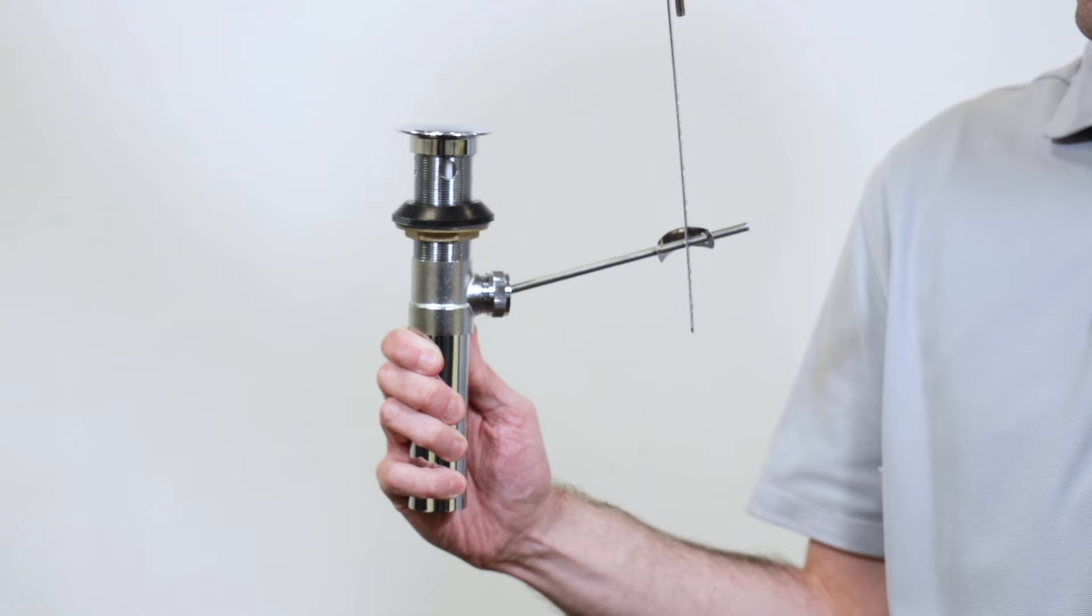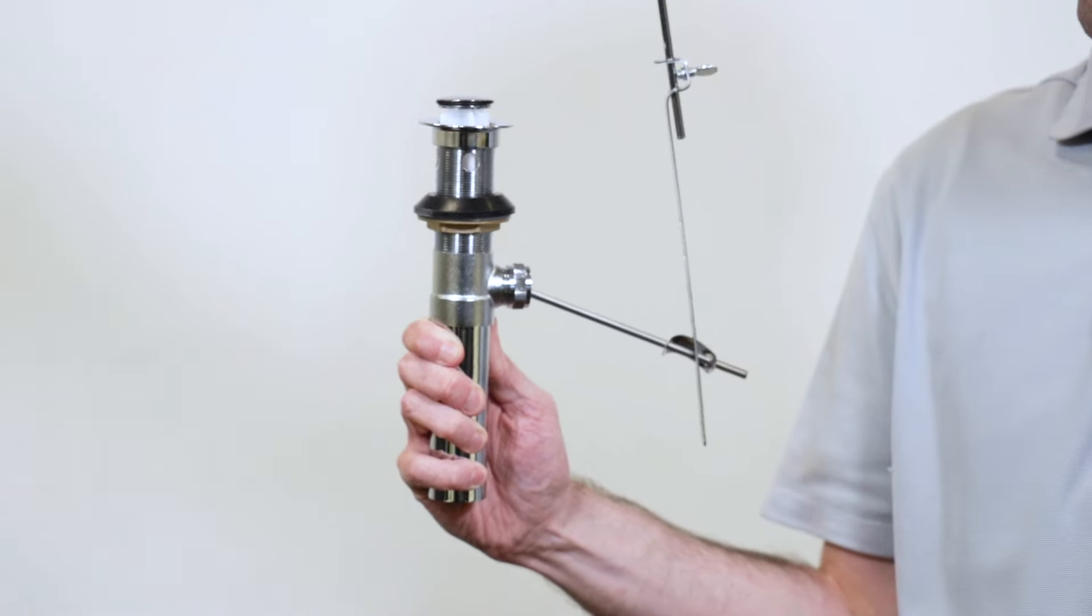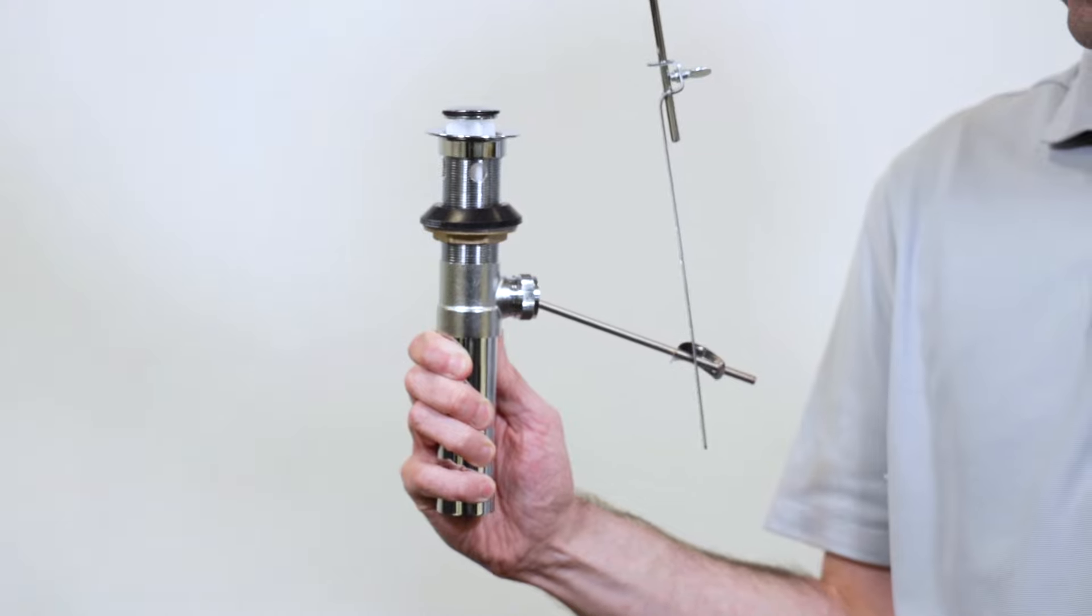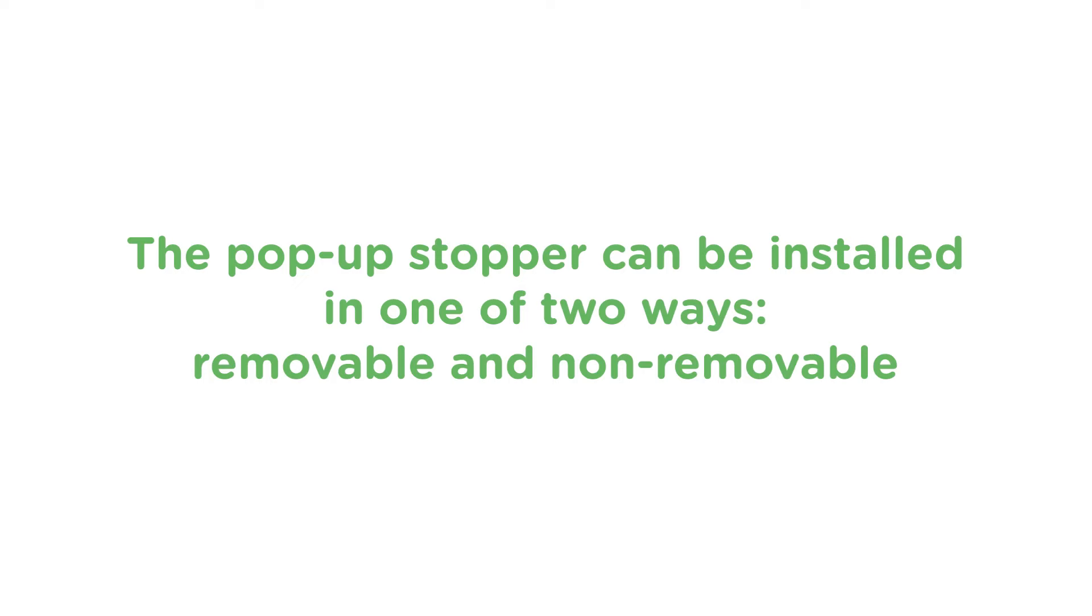Now, we're on to the pop-up linkage. Some people have trouble grasping how it works, but it's just a simple linkage that uses leverage to move the stopper up and down. The pop-up stopper can be installed in one of two ways, removable and non-removable. Each method has pros and cons.